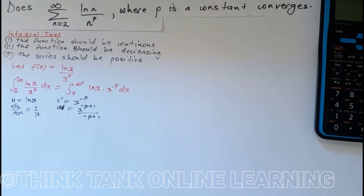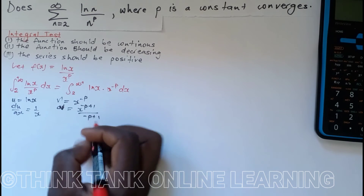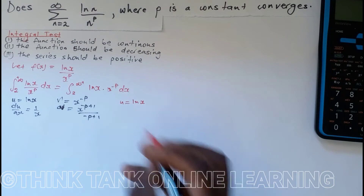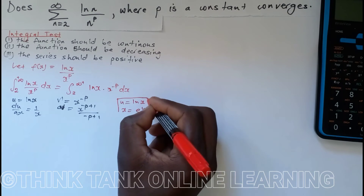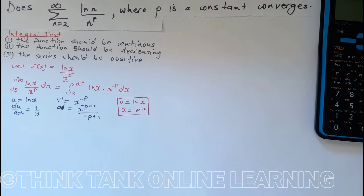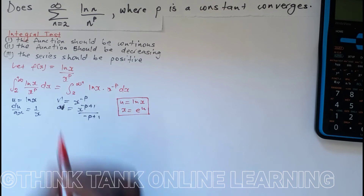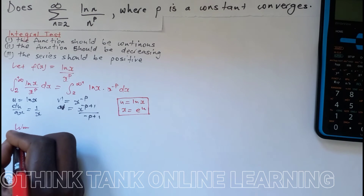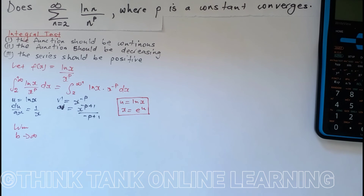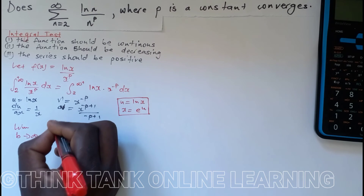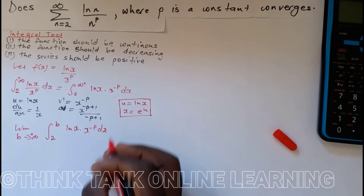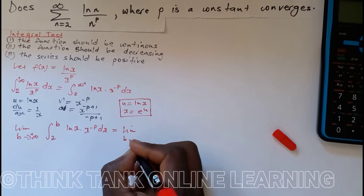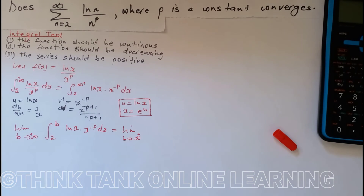There's something helpful I need to note here. We have u = ln(x), so x = e^u by taking the exponential of both sides. We'll use this information later — it's going to be very helpful. Now, instead of writing infinity directly, we're going to write the limit as b approaches positive infinity, from 2 to b.